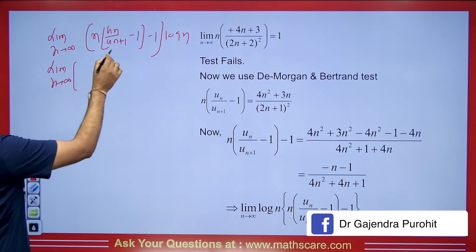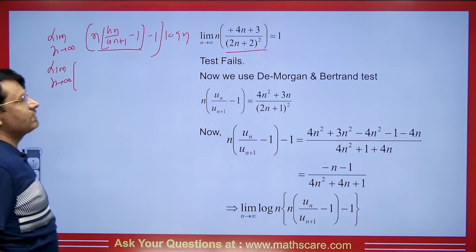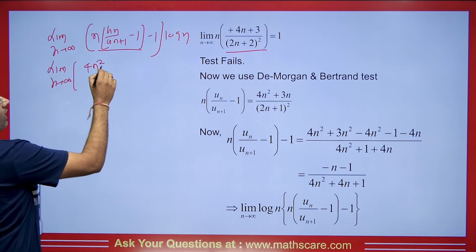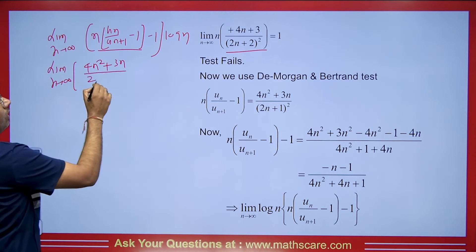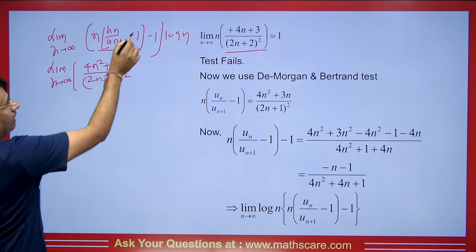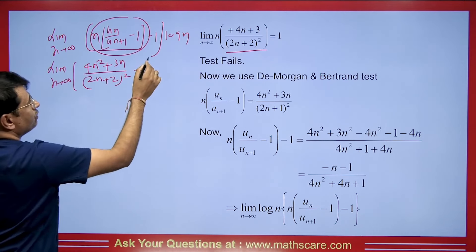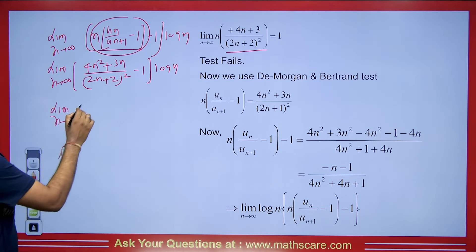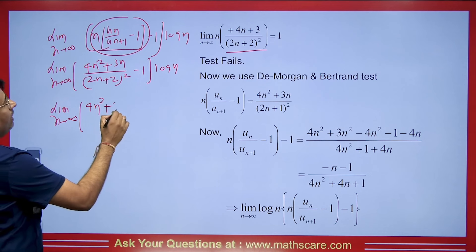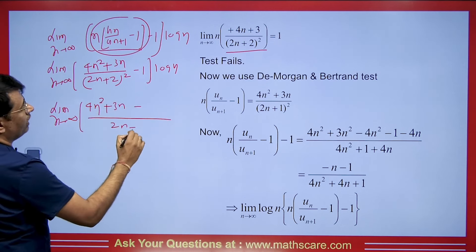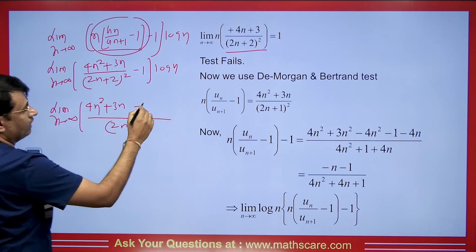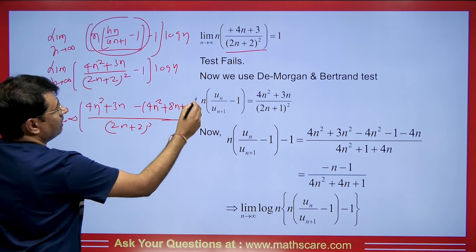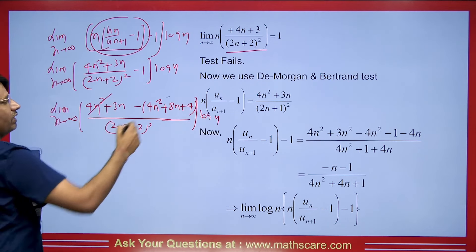Taking the limit as n tends to infinity, we already found the inner value from the Rabbe test. We multiply N inside and obtain: (4N² + 3N) / (2N+2)² minus 1, multiplied by log N. Simplifying by taking the LCM, we expand (2N+2)² to get 4N² + 8N + 4. We can see that 4N² cancels with 4N², leaving: limit as n tends to infinity of (−5N − 4) / (2N+2)² × log N.